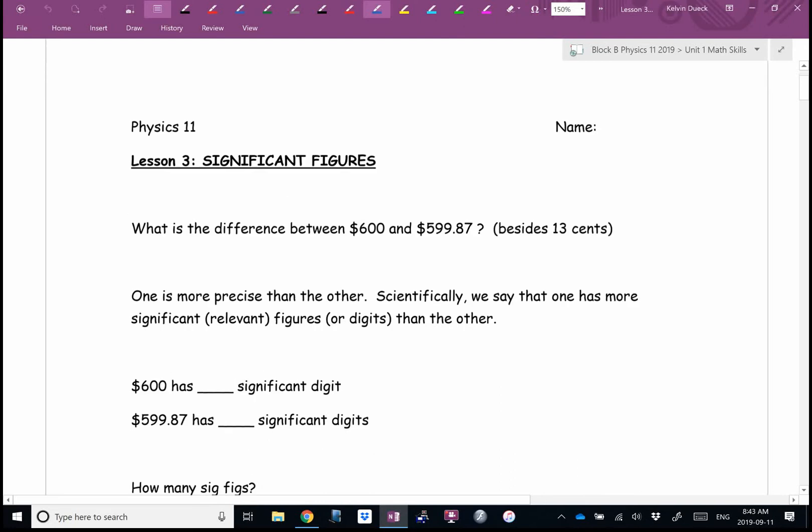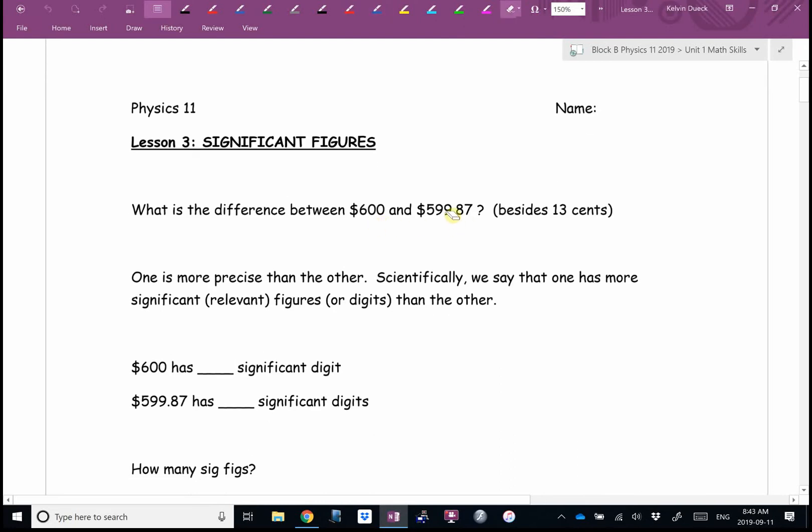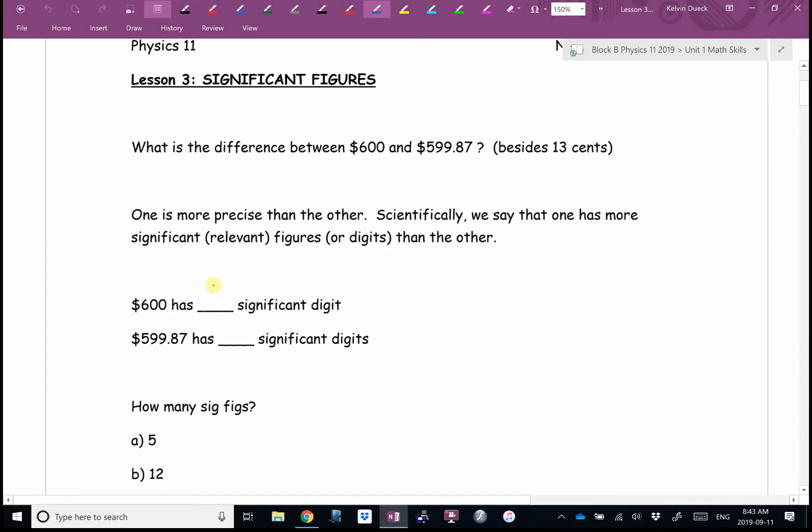What's the difference between $600 and $599.87? One is more precise than the other. Scientifically, we say one has more significant, measured, or relevant figures than the other. Look up: $600 has one significant digit, $599.87 has five.